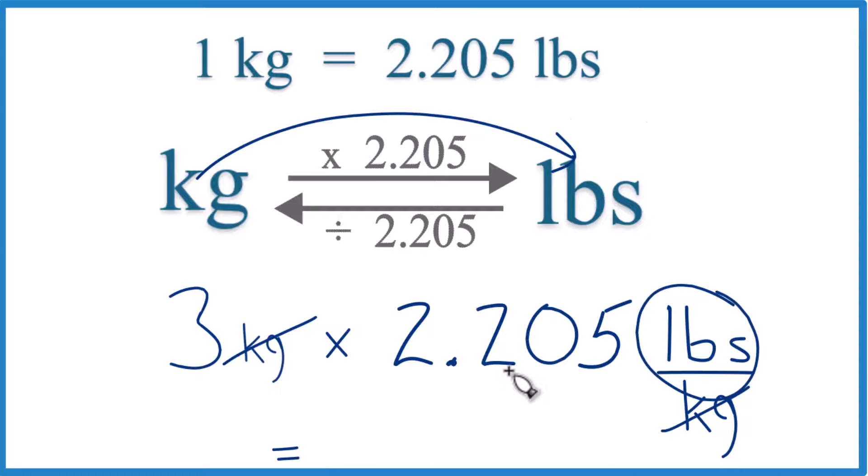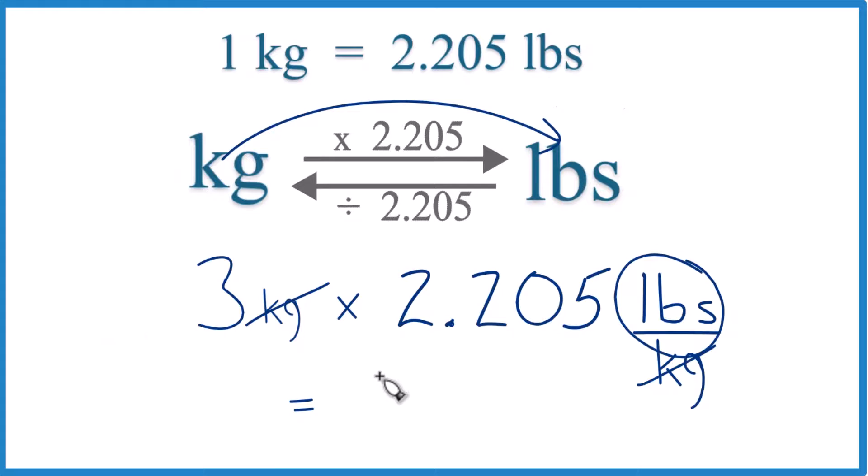So 3 times 2.205 pounds, that equals 6.615. And the units, all that's left here are the pounds. You could round this number if you needed to.